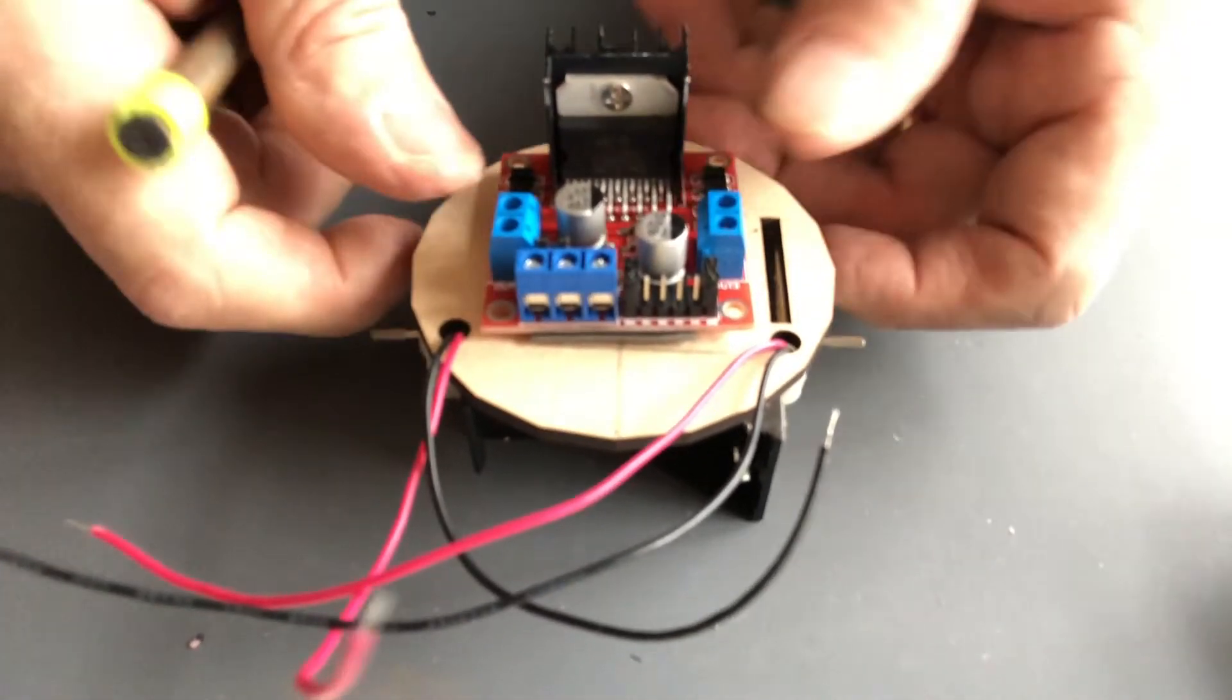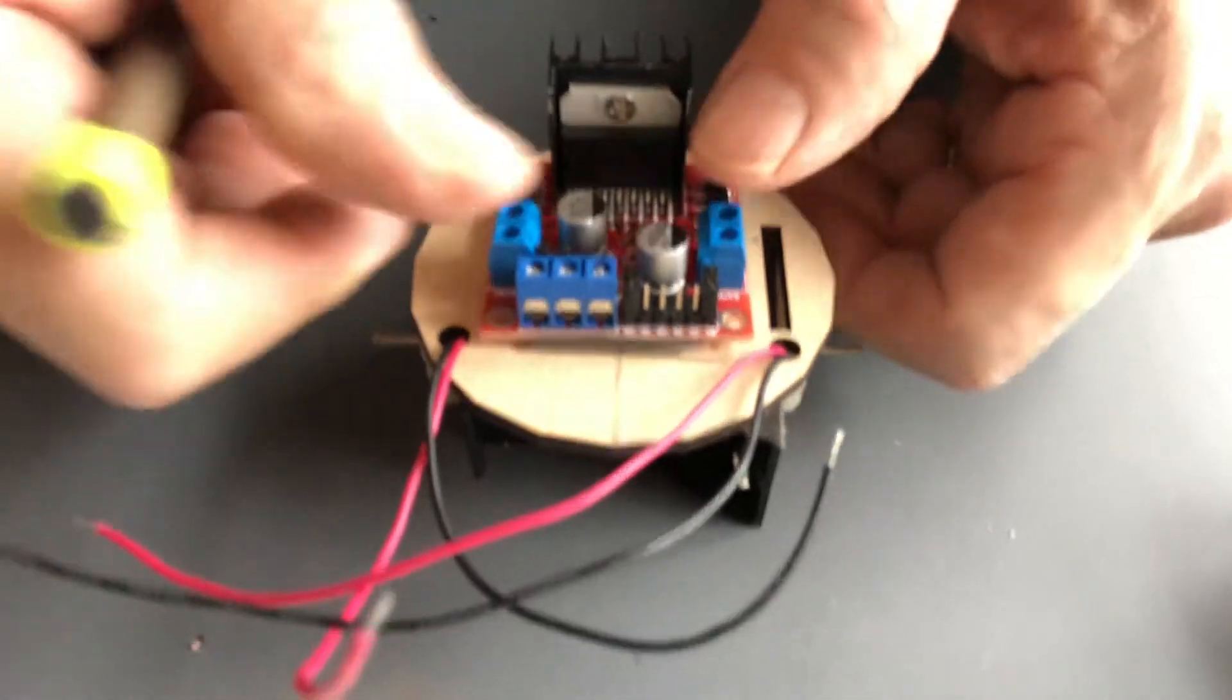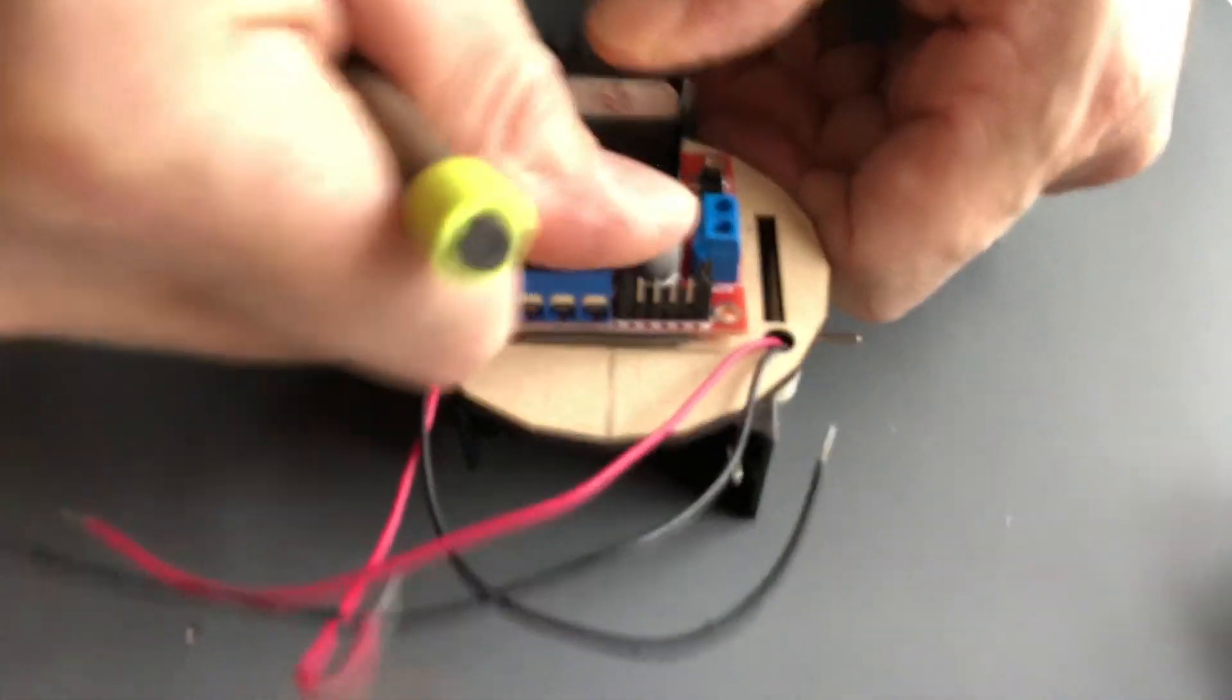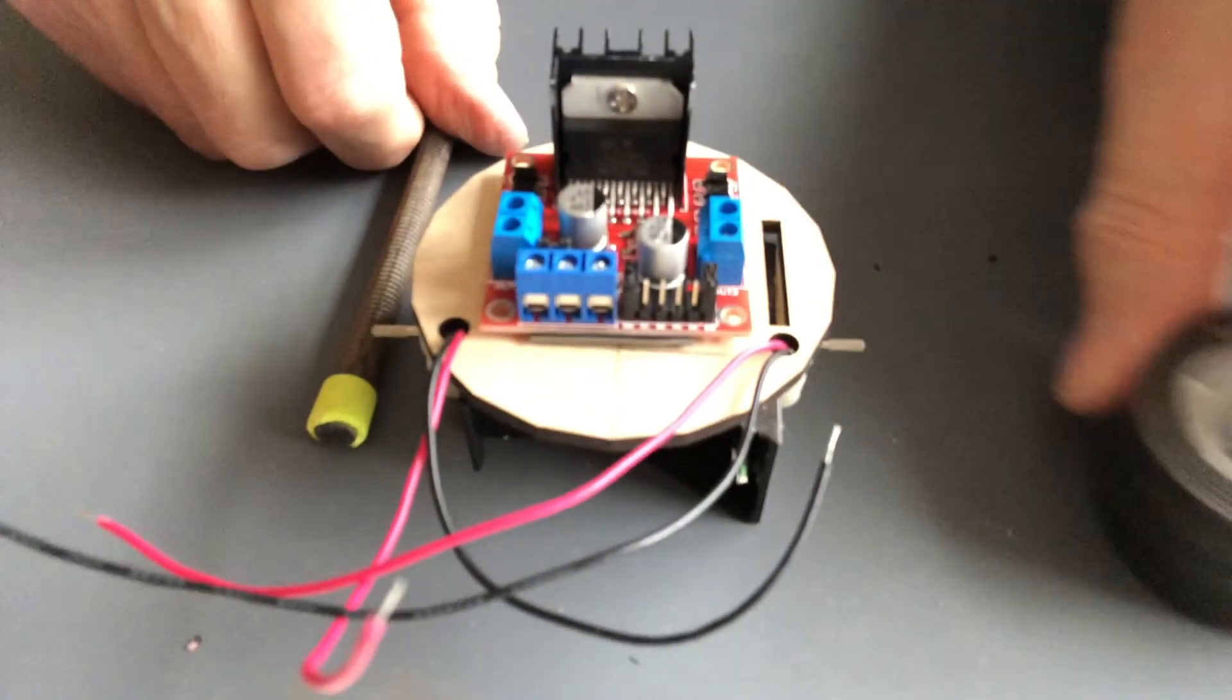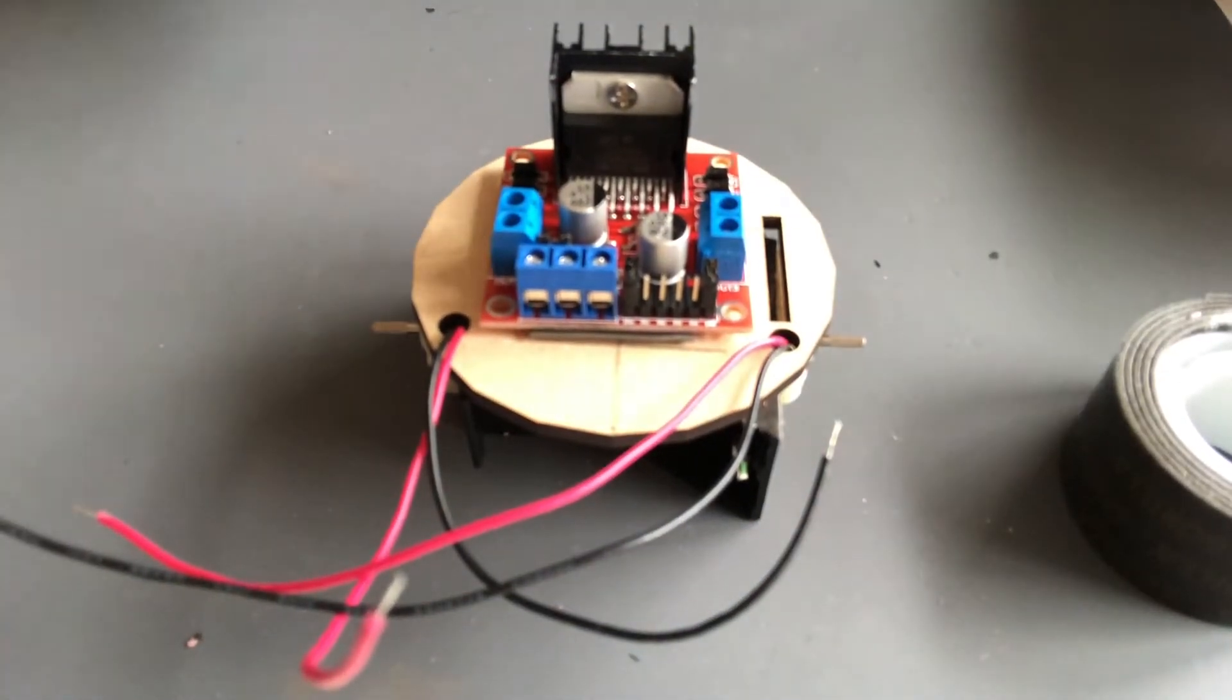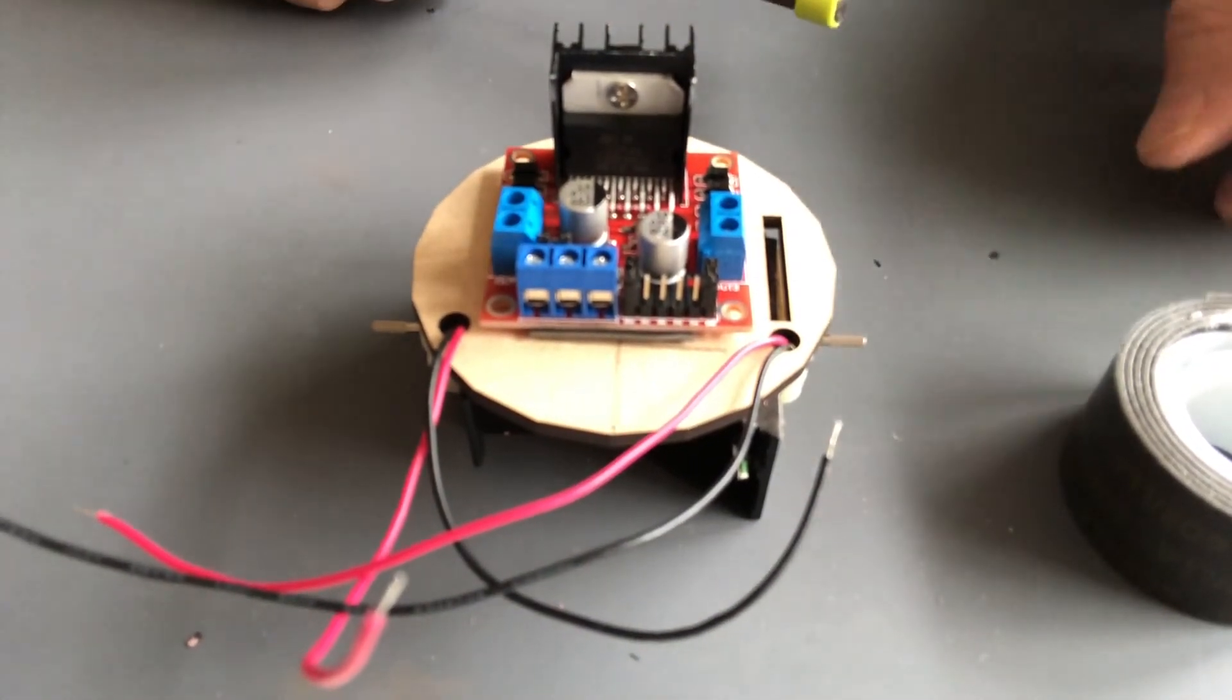Once we have it where we want it, just press firmly on the motor assembly to adhere it to the base. That's it. That's how we attach the motor assembly to the base of our Arduino Bot.